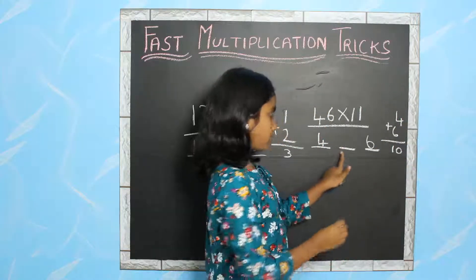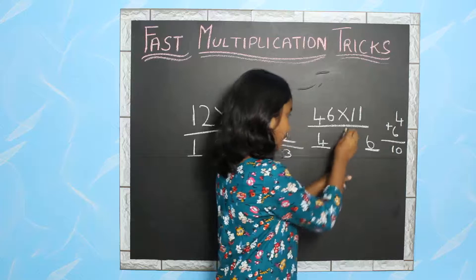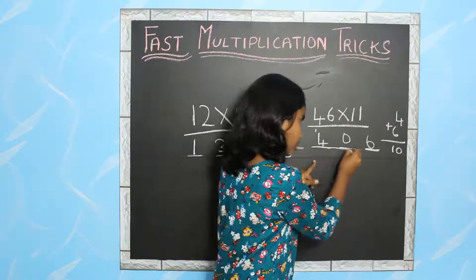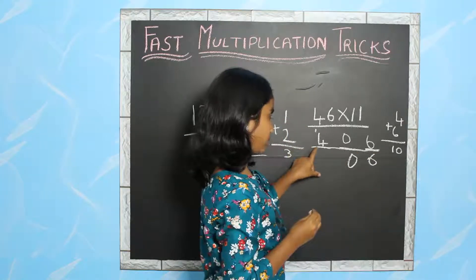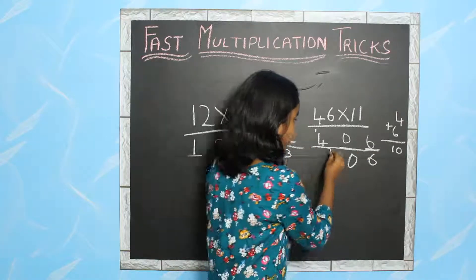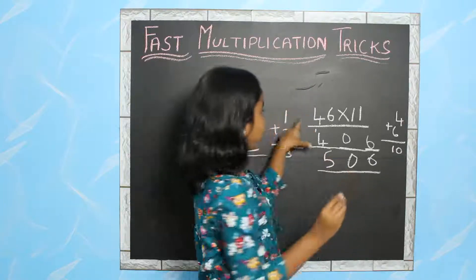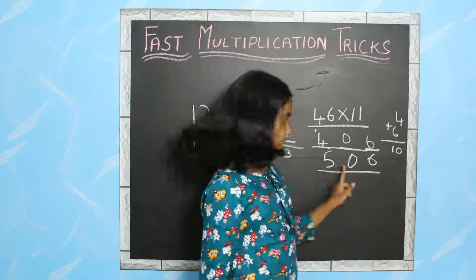I am going to add 0 in the tens place and carry over 1 to the hundreds place. 4 plus 1 is equal to 5. So 46 into 11 is equal to 506.